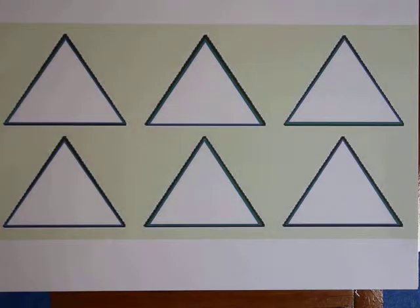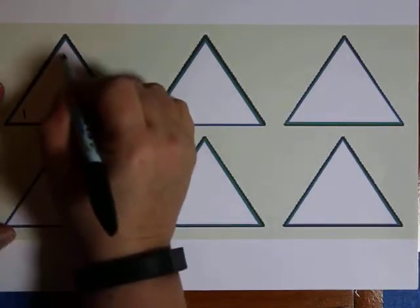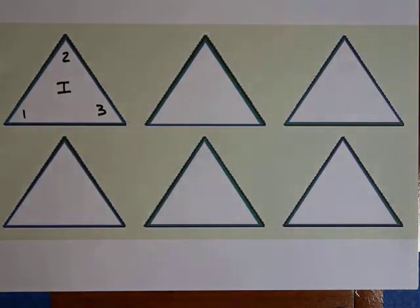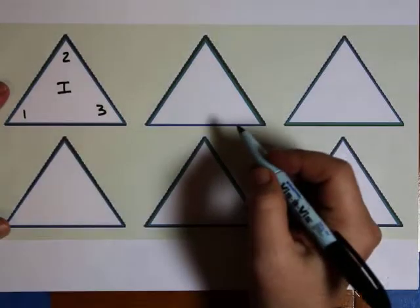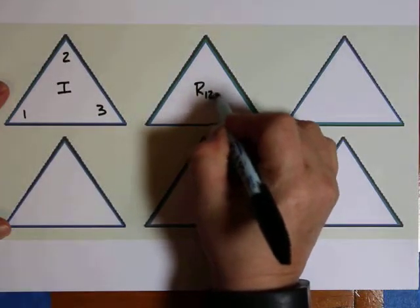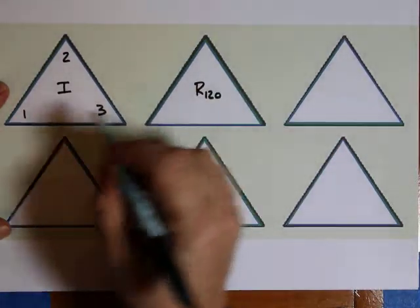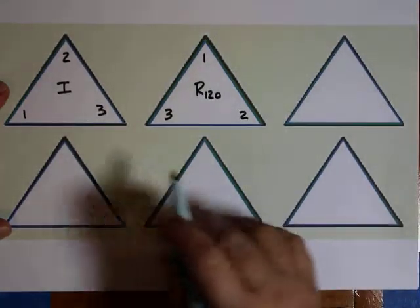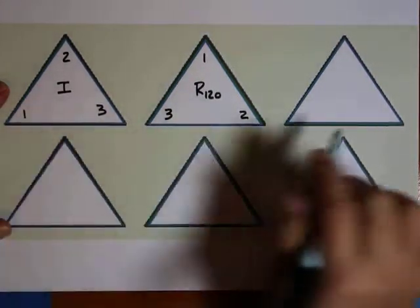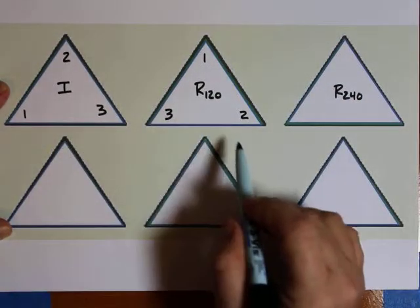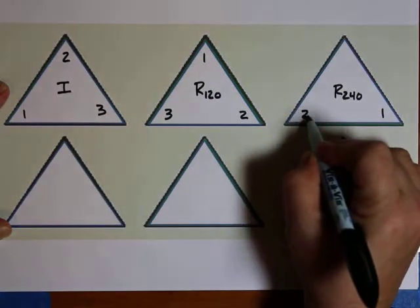The group set elements can be shown with these six triangles. The first one is the identity triangle — it represents no movement. The second one is a rotation of 120 degrees, called R₁₂₀, where the vertex labeled 1 goes here, 2 here, and 3 here. If I rotate the identity triangle 240 degrees, the 1 will go here, the 2 here, and the 3 here.